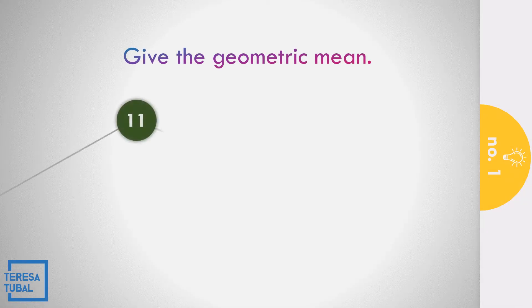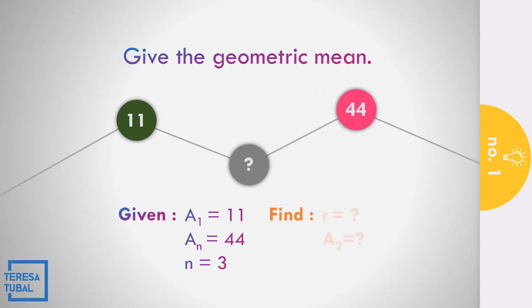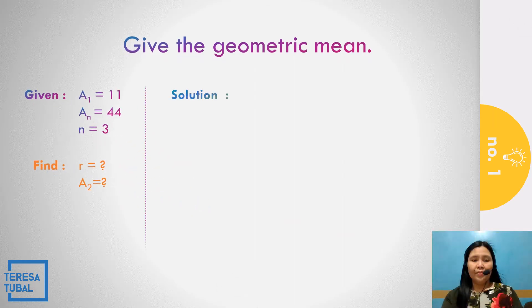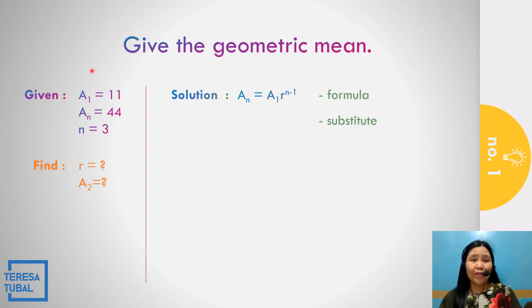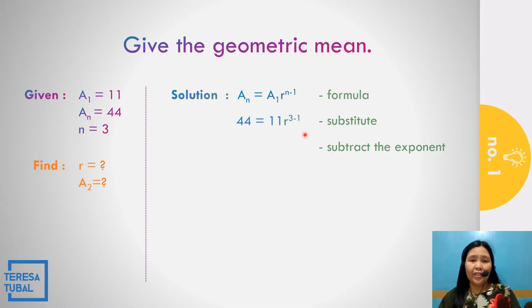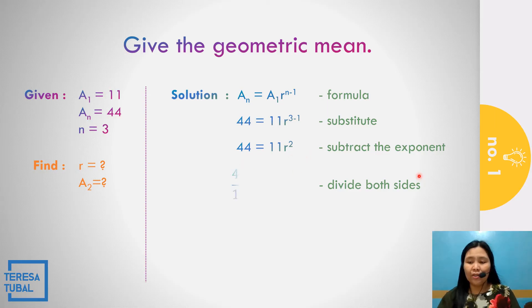Question number 1: Give the geometric mean between 11 and 44. The first term is 11, the last term is 44, and the number of terms is 3. Let us identify the common ratio. Using the formula a sub n = a sub 1 times r raised to n minus 1, we substitute: 44 = 11 times r raised to 3 minus 1, which gives r squared. To solve for r squared, divide both sides by 11: 44 divided by 11 equals 4, so r squared equals 4.